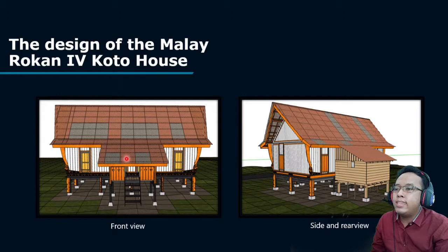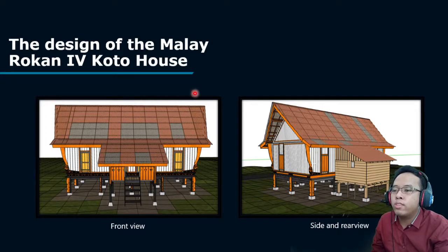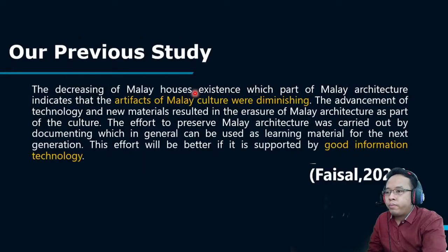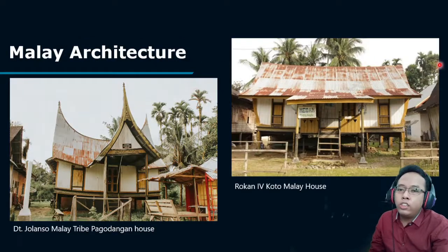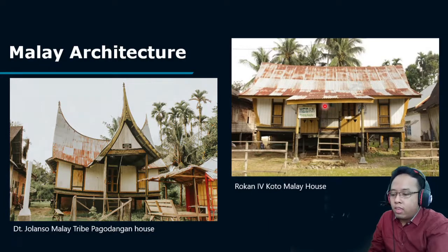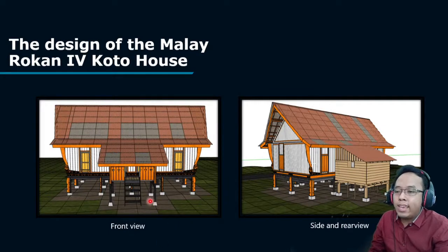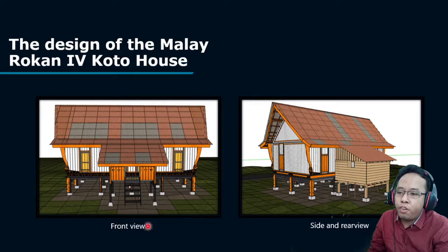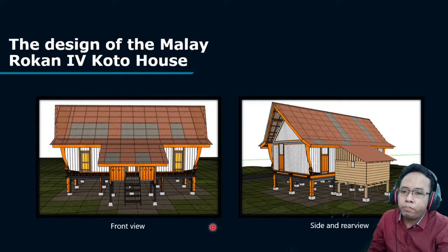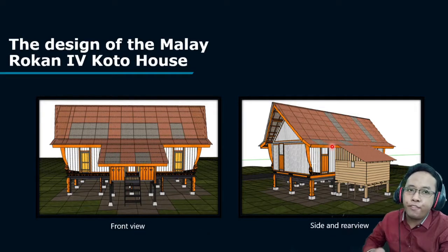This is the design of the Malay Rokan Forkoto house. We used Google SketchUp Pro 2015 to design it. This is the original photograph of the Rokan Forkoto Malay house, and this is our design, showing the view from the front side, the side view, and the rear view.